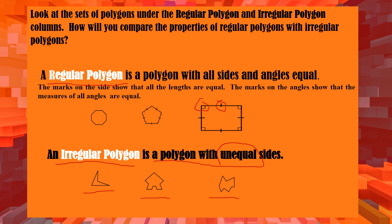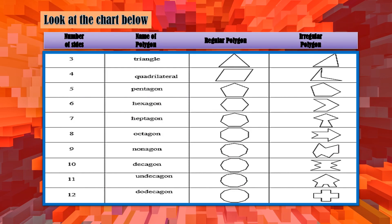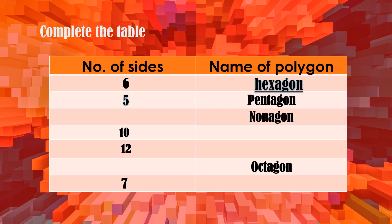Let's look at the chart with number of sides, name of polygon, regular polygon, and irregular polygon. With three sides, the name is triangle. A regular triangle has the same sides, while an irregular triangle has a different shape with different side lengths. A pentagon has five sides.